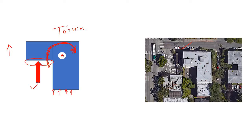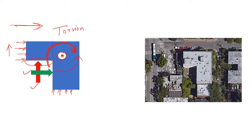Now if the wind or seismic load comes from this perpendicular direction, the loads passing through the main portion are again fine because they pass through the CG. But the load in the offset region again creates a torsion about this CG.